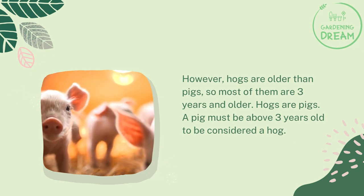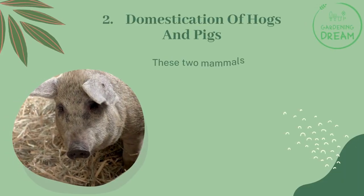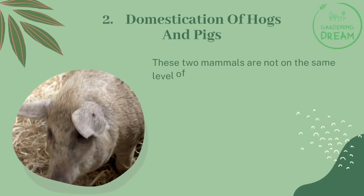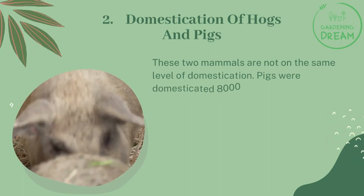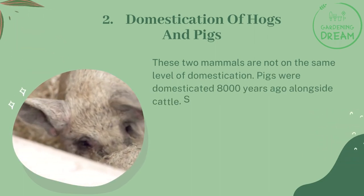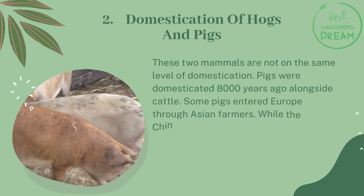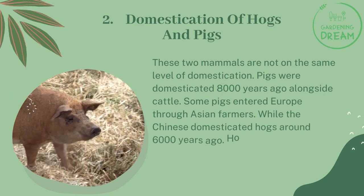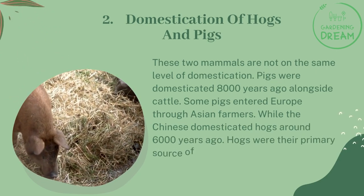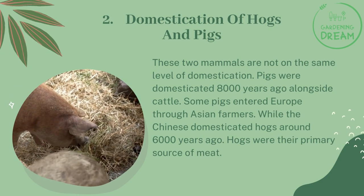These two mammals are not on the same level of domestication. Pigs were domesticated 8,000 years ago alongside cattle. Some pigs entered Europe through Asian farmers, while the Chinese domesticated hogs around 6,000 years ago, making hogs their primary source of meat.